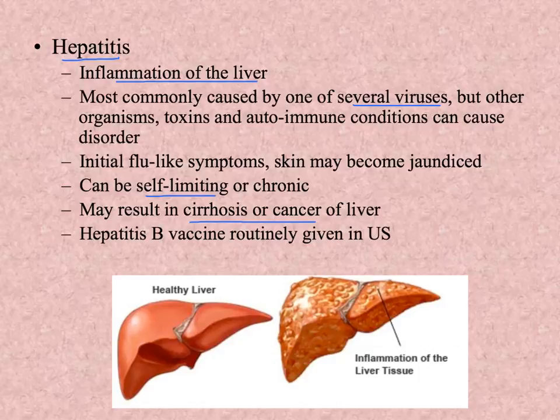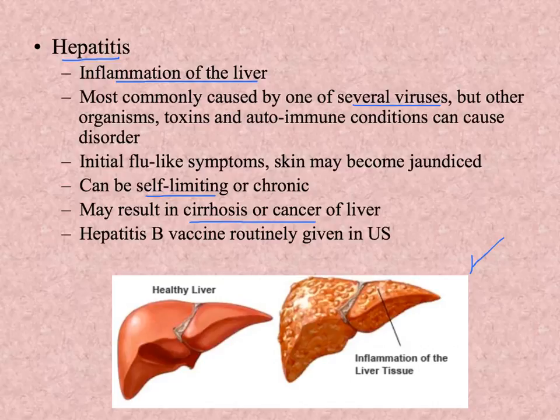Hepatitis B vaccine is routinely given in the United States because it is very common. It is a sexually transmitted disease spread by semen, blood, and vaginal secretions, and so it has become part of our routine vaccination program. We've got some diagrams here showing what an inflamed liver might look like.